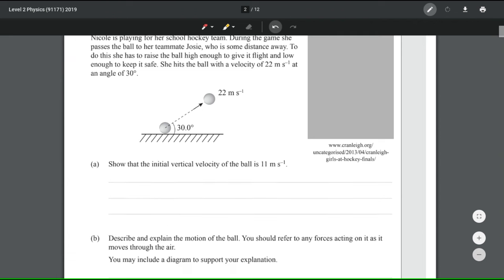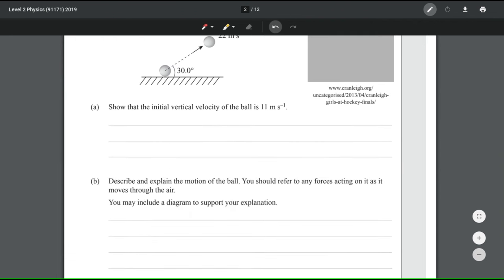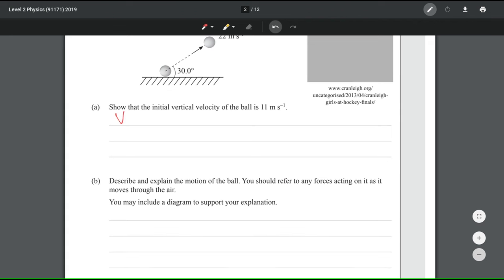We're asked in the first question to show that the initial vertical velocity of the ball is 11 meters per second. So we can do that, our vertical initial y velocity, which is the notation I like to use, is equal to 22 sine 30, which if you put into your calculator does indeed give you 11 meters per second.